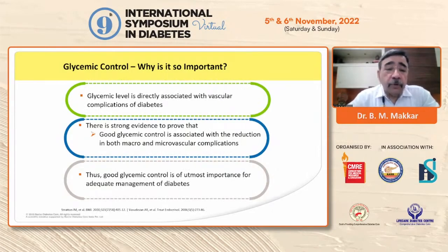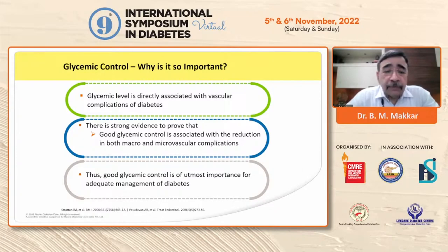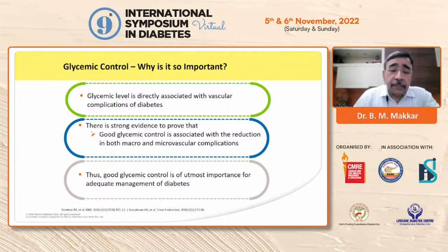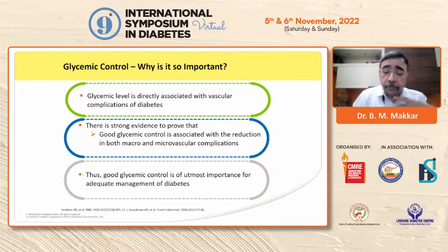Why is it important to have good glycemic control? We know that increased glucose level is the hallmark of diabetes, and controlling glucose levels is directly associated with vascular risk. There is strong evidence that good glycemic control is associated with reduction in both micro and macro complications, making it of the utmost importance in optimum management of diabetes.